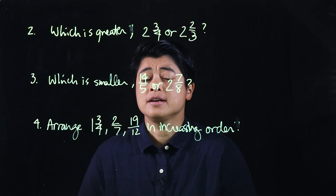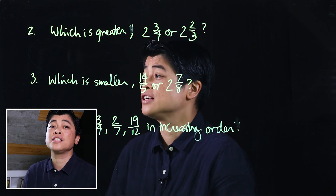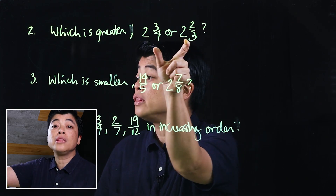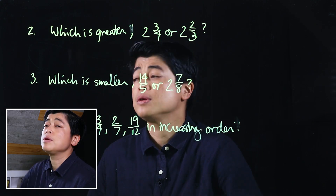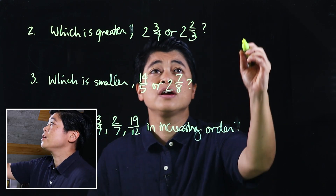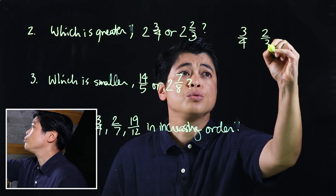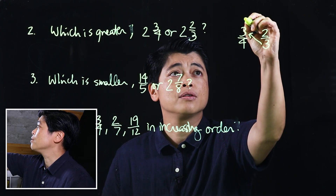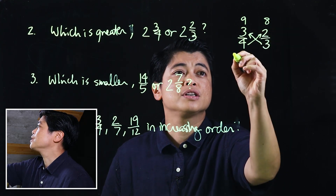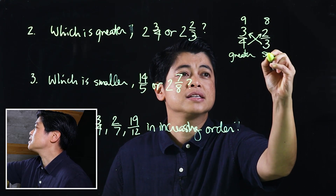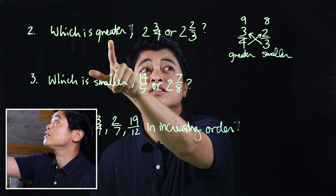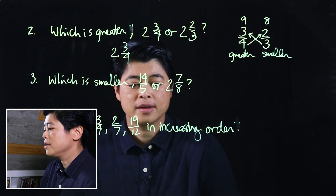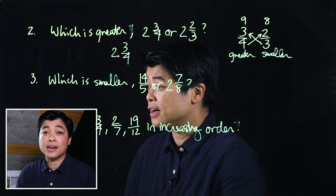The first question asks which is greater. Both are mixed numbers with a whole number of two, so we compare the fractions. Comparing three-fourths and two-thirds using the grade three strategy, we multiply across: that gives us nine and eight. Nine is greater, so two and three-fourths is the greater one.